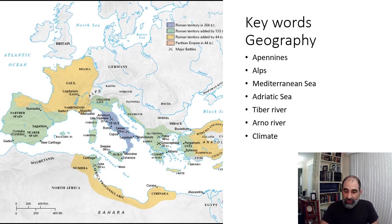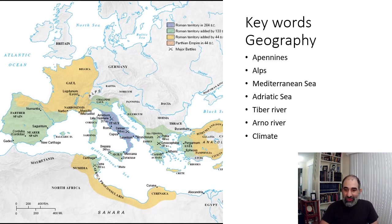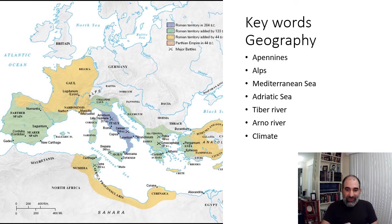So the geography — whether it's the mountains, rivers, or climate — is key in helping Rome succeed and thrive. That's the first bit of information I want you to know. From there, we're going to move on in the next topic and talk about the story of the birth of Rome, and then move on to some other really cool things. I hope all that's clear, and as always, if you have any questions, let me know. Thank you.